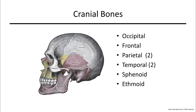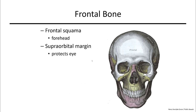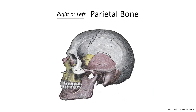Now let's continue with the cranial bones. The frontal bone makes up our forehead. The two features are the frontal squamous, which is pretty much your forehead, and the supraorbital margin, which is the ridge line near your eyebrows. The parietal bone has no features that you need to know — you just need to know right or left parietal bone because there are two.